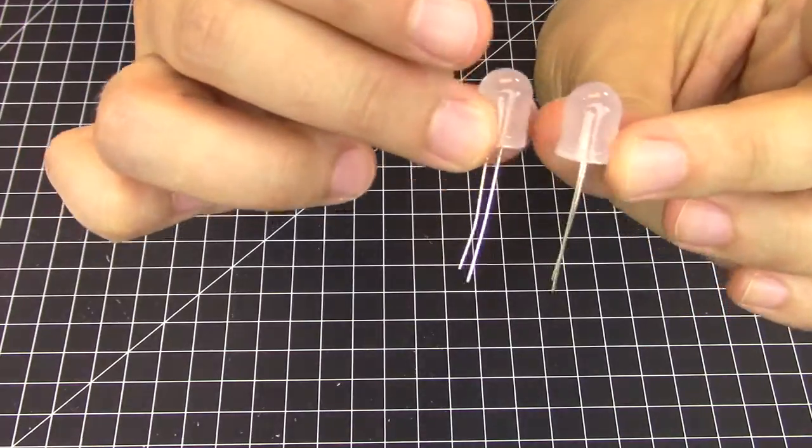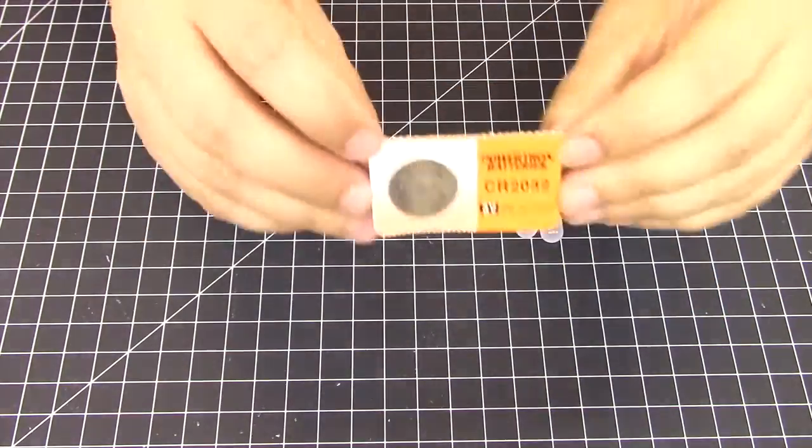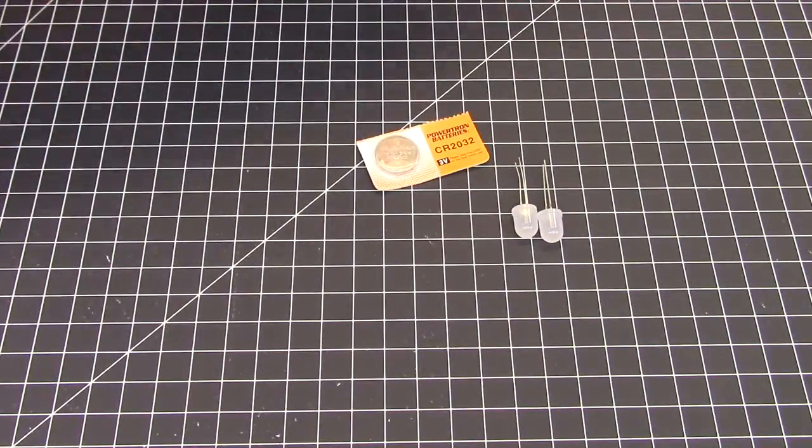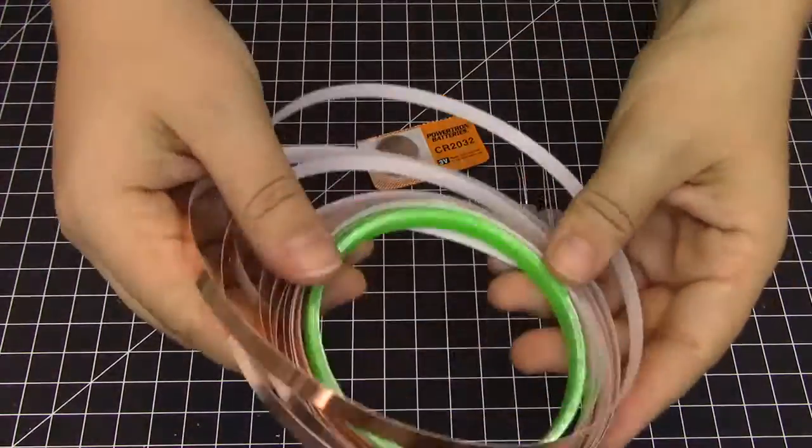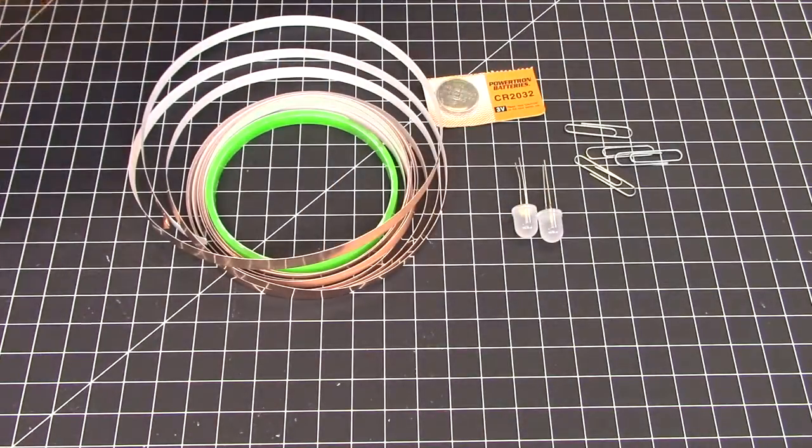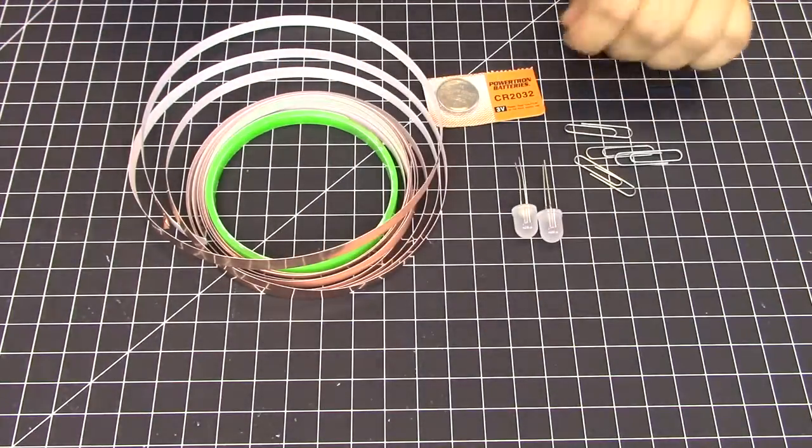You'll need two LEDs, your handy-dandy CR2032 battery, and your conductive copper tape. You'll also need paper clips. You can use the regular sized ones or the jumbo ones.